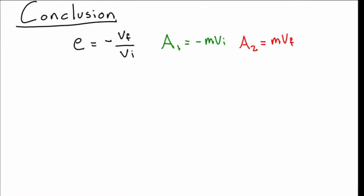Let's try to find the relationship between these three equations. If we do a2 over a1, we're going to end up having negative mv final over mv initial. Now, the masses are the same, so we can cross these out. And what we're going to end up having is negative v final over v initial, which is also equal to our coefficient of restitution.